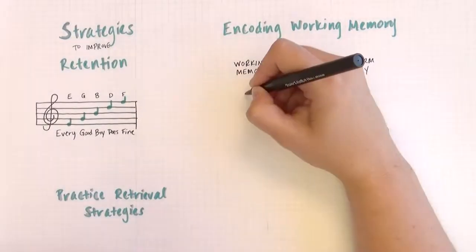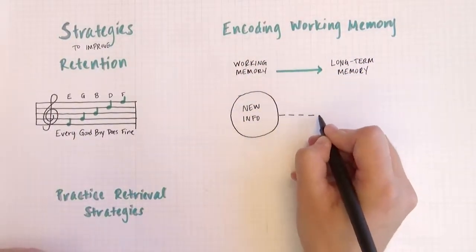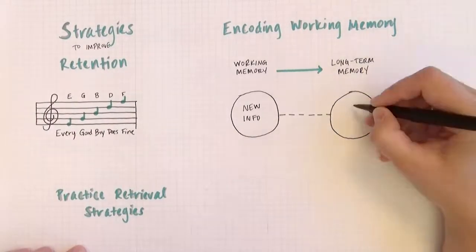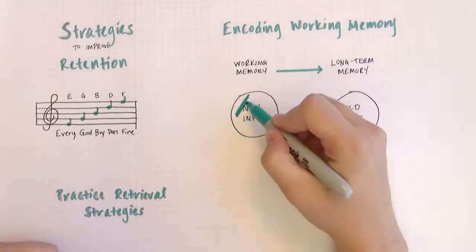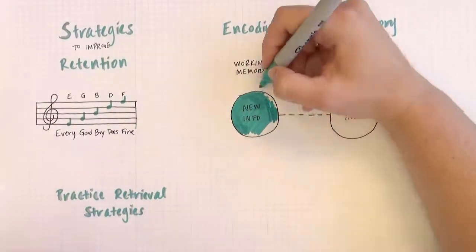Working memory only has so much space to store information, but if you work with it enough, encoding will eventually occur. Encoding happens when information is sent from your working memory to your long-term memory.